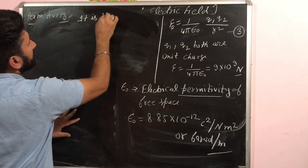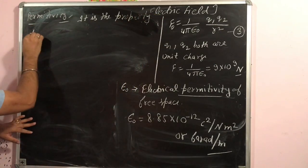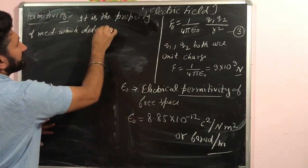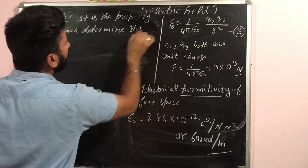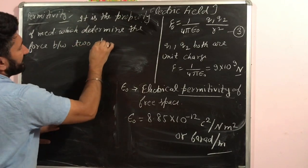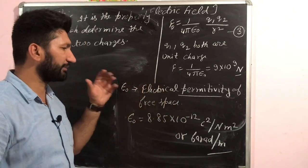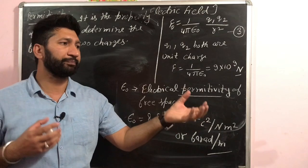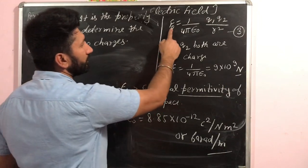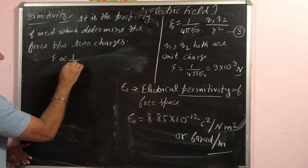Electrical permittivity is the property of a medium which determines the force between two charges. The force is inversely proportional to permittivity. Air has a low permittivity, while water has a higher permittivity compared to air.